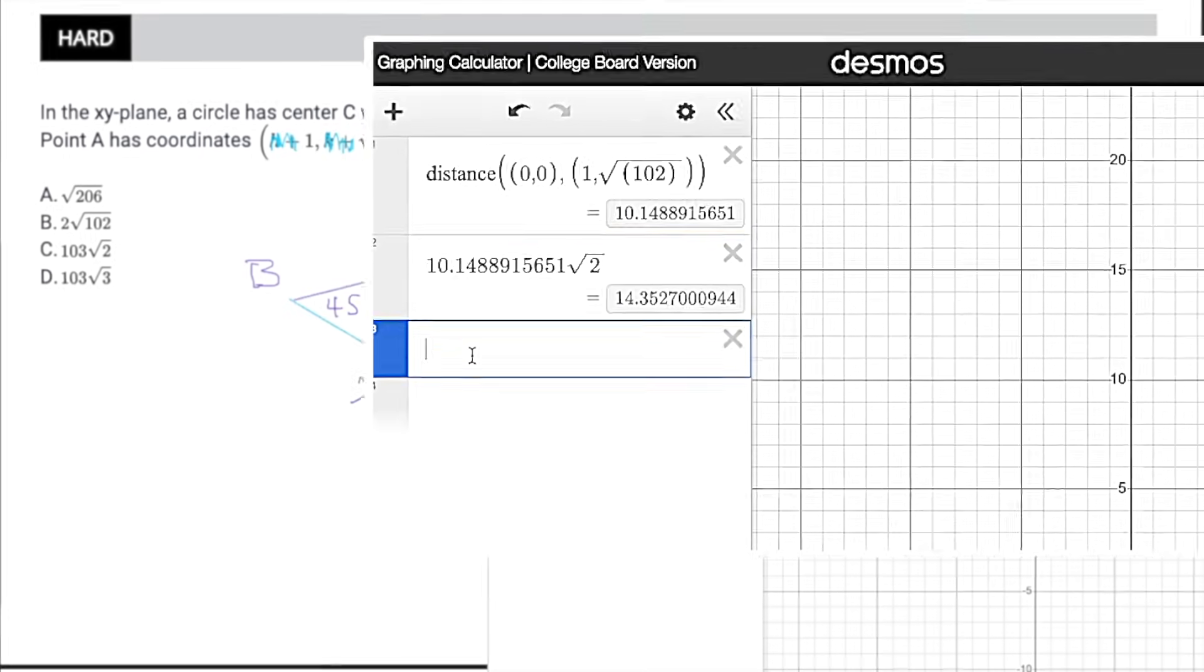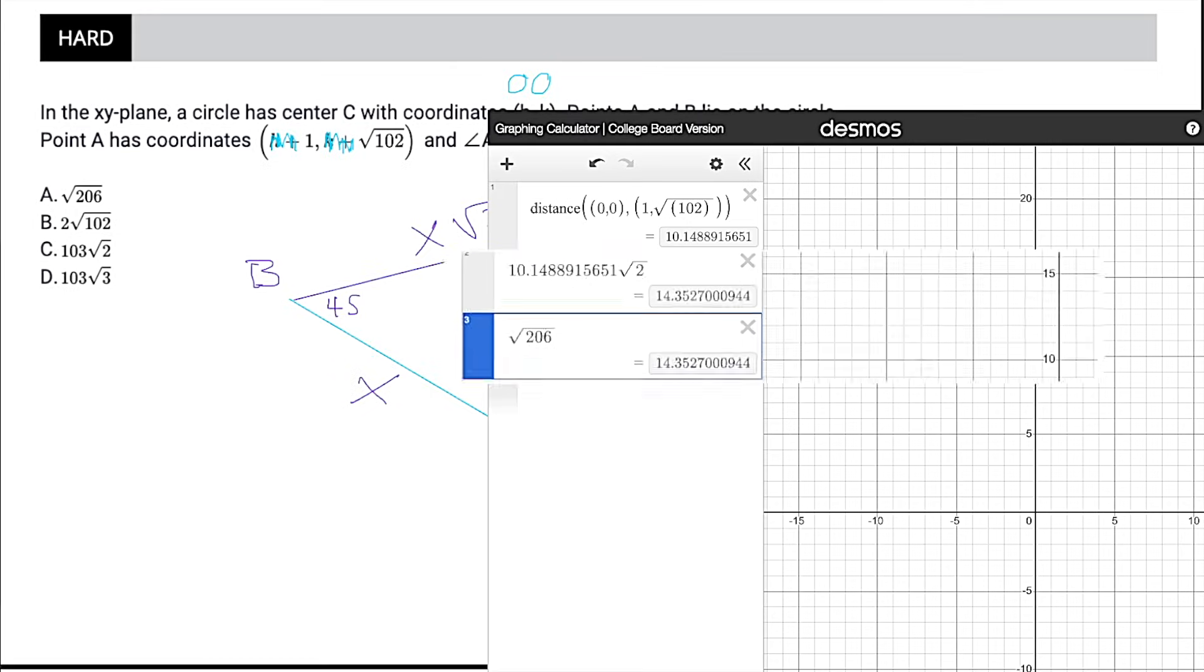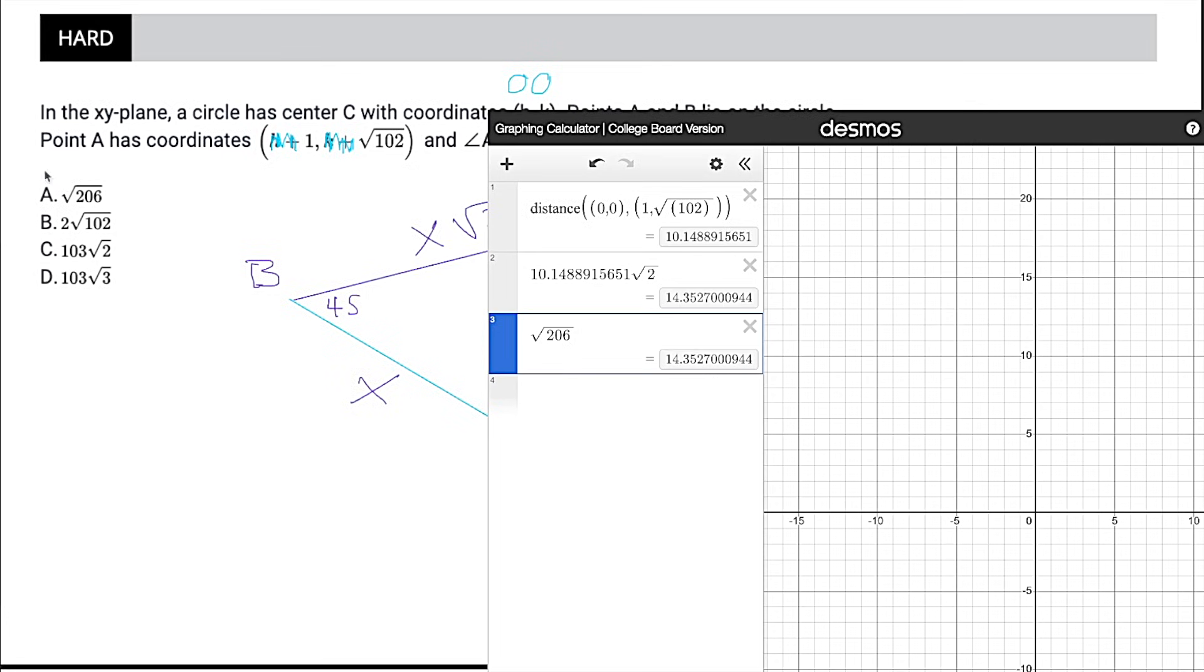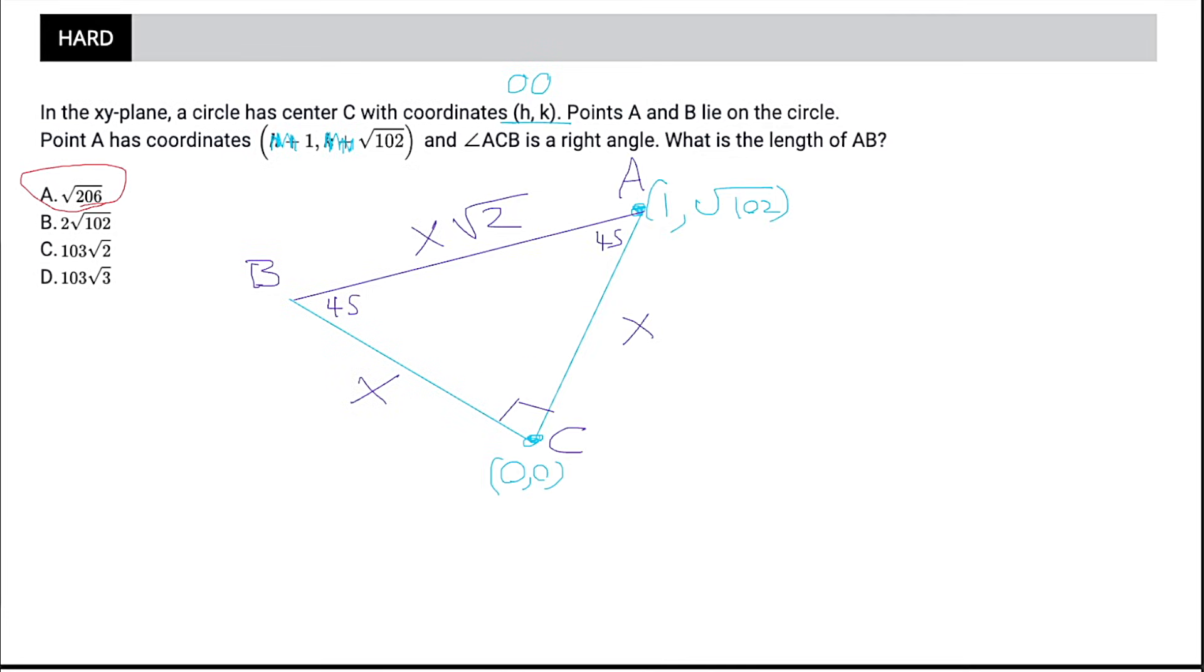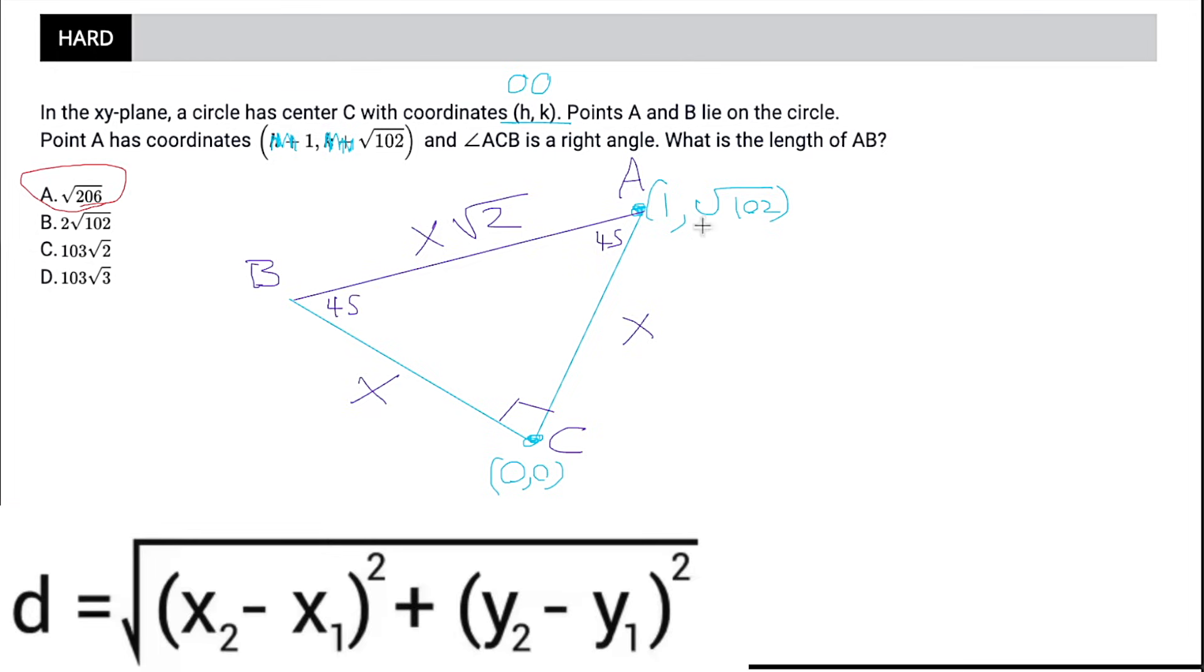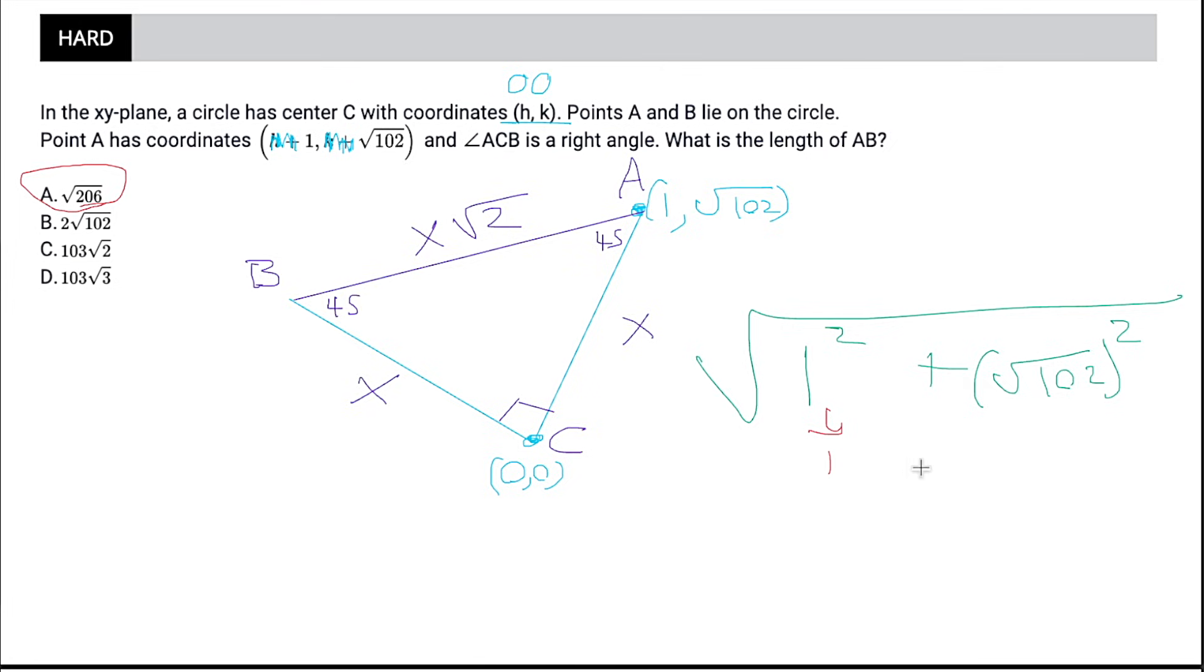Of course, our answer choices are not in the form we'd like, but we could plug them in. So choice A is square root of 206. And boom, we have an instant match. So our answer is choice A, just like that. Alternatively, if you do know the distance formula, this ends up being a nice, clean solution because normally we're going to have this complicated formula here, but instead, because our first points are 0, 0, we just ignore them. So our distance formula becomes the square root of 1 squared plus square root of 102 squared. 1 squared is just 1. The square root of 102 squared is just 102. So then the square root of 103 is X. And then if we multiply square root of 103 times the square root of 2, we can just multiply them straight across. 103 times 2 is 206. So the square root of 206 is our answer.